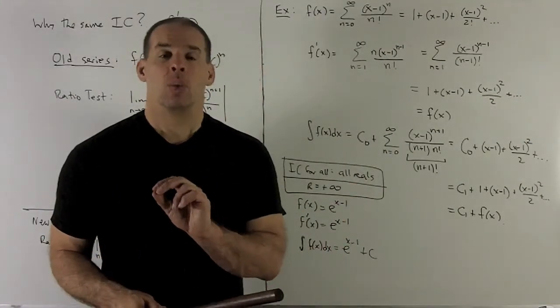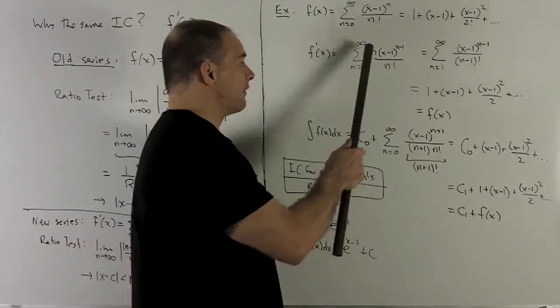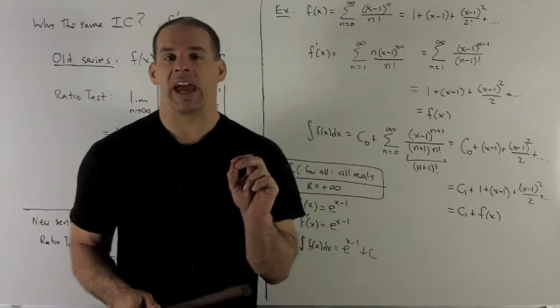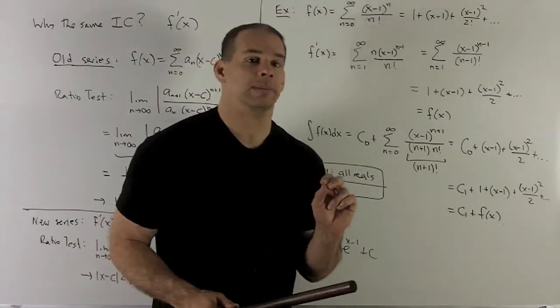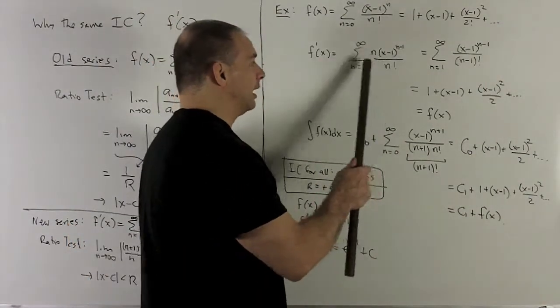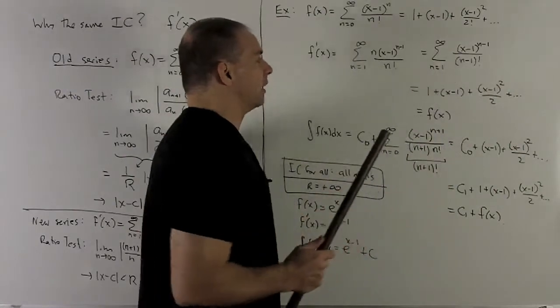n! is going to be the product of 1 through n, but we're going to have n on top, so the n's are going to cancel out, leaving me with a product on the bottom of 1 through n-1. So that's going to be (n-1)! down here.